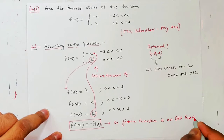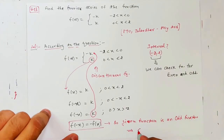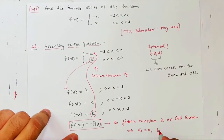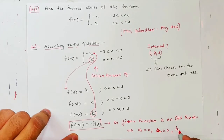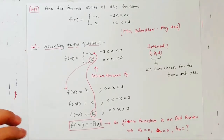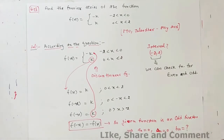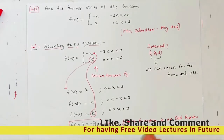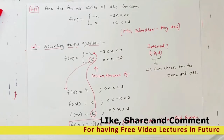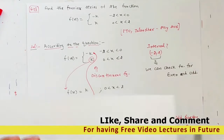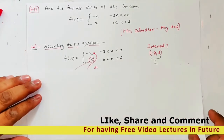Aur aapko pata hai jab bhi koi function odd ho, toh uska a₀ bhi 0 hota hai aur aₙ bhi 0 hota hai — aur sirf aapko kya nikaalana hai, bₙ. Toh a₀ aur aₙ do toh aa chuke hain 0. Ab mera sirf kaam bacha bₙ pe. Toh teen integrations meri sirf ek integration bachi — baaki do toh automatically 0 hoti hain. Toh that's enough benefit of checking any function as even and odd function.